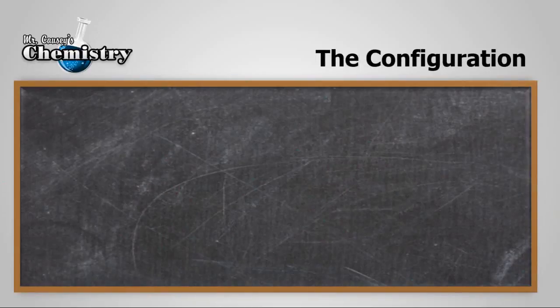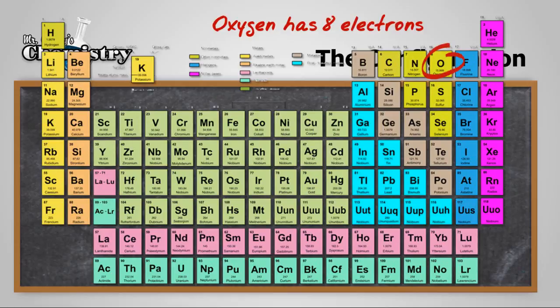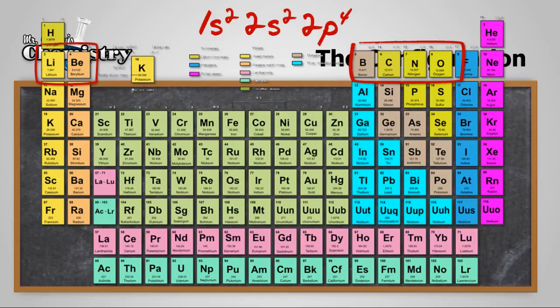And to find the configuration, let's go to the periodic table and find oxygen. And oxygen has eight electrons and six valence electrons. Let's do the configuration. 1s2 is the first energy level. Now the valence electrons are going to be 2s2 and 2p4. And there's our valence electrons and our electron configuration.